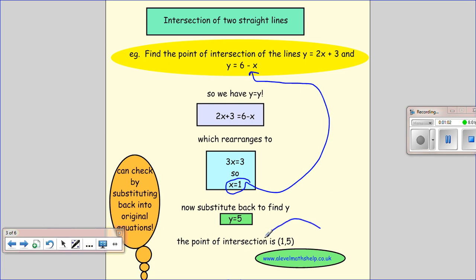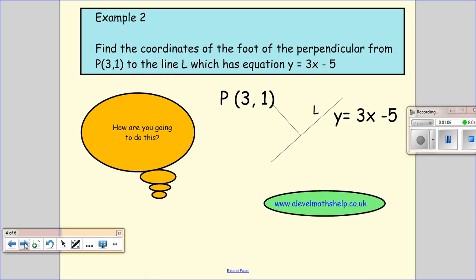The next question is slightly harder, but I'm sure we can manage it. Find the coordinates of the foot of the perpendicular from P at (3,1) to the line L which has equation y=3x-5. The foot of a perpendicular is the line which comes from your point and hits your line at right angles.